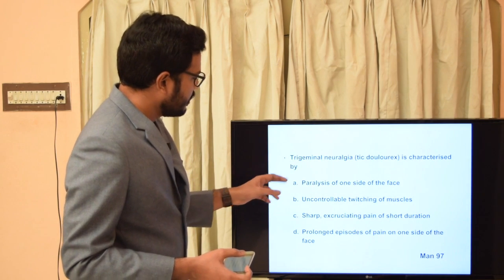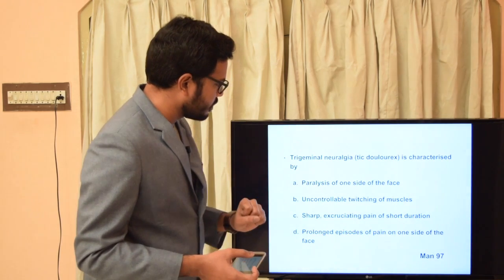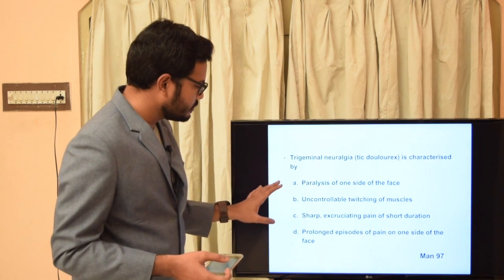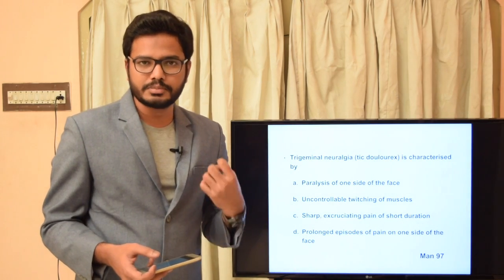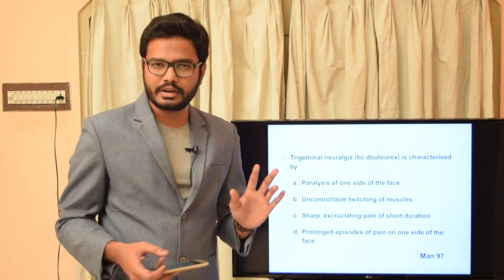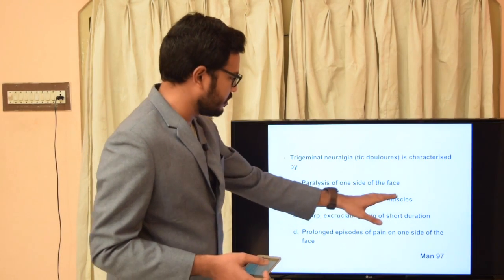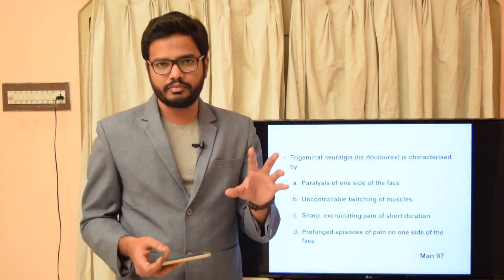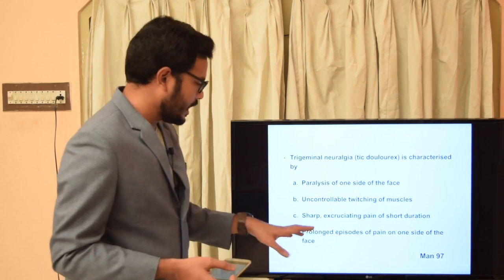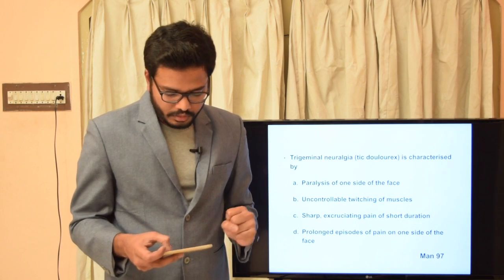MCQ: Trigeminal neuralgia / tic douloureux is characterized by: paralysis of one side of face; uncontrollable twitching of muscles; sharp excruciating pain of short duration; or prolonged episodes of pain on one side. The answer is sharp excruciating pain of short duration. There is no paralysis; the twitching is only a brief spasmodic facial muscle contraction after a pain episode; and the pain is short in duration, not prolonged.